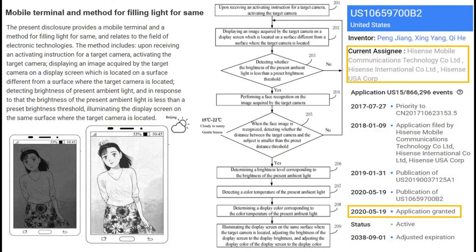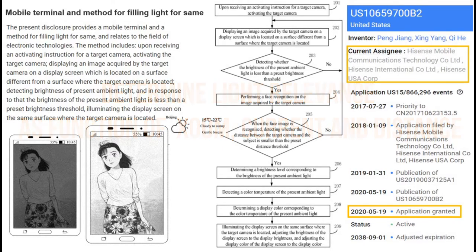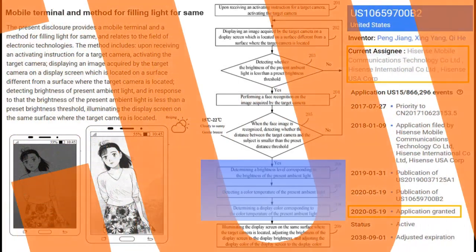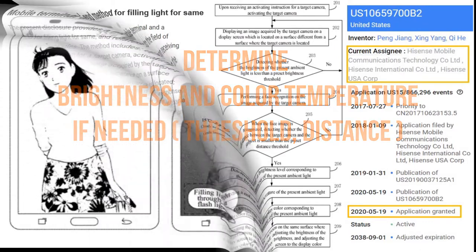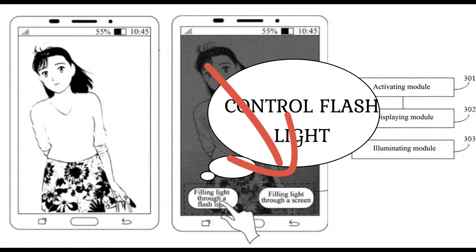2. Relevance of light is a function of zoom level, current, and distance. 3. Check the brightness level of ambience with a threshold. 4. Determine brightness and color temperature for illuminating the preview. Please refer to the details for the mentioned patent.